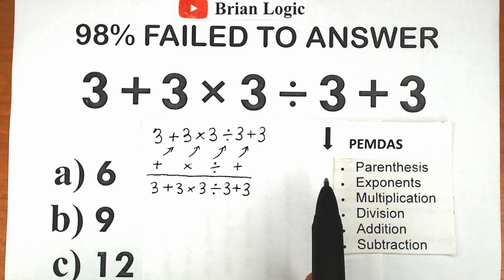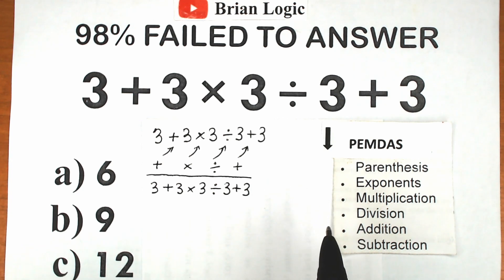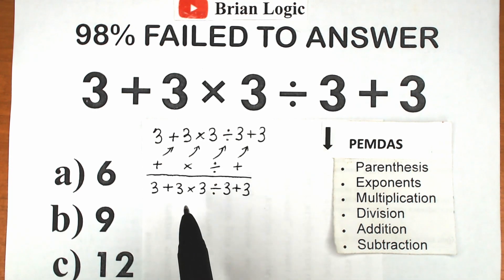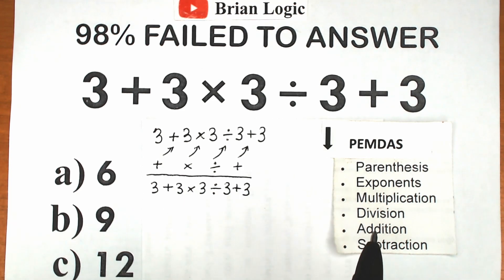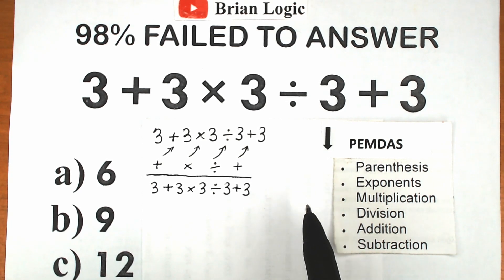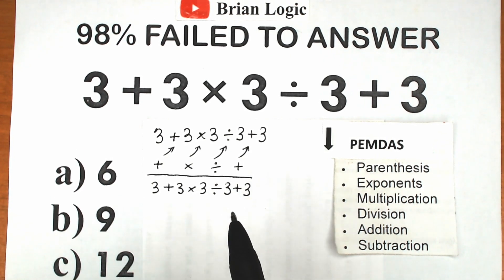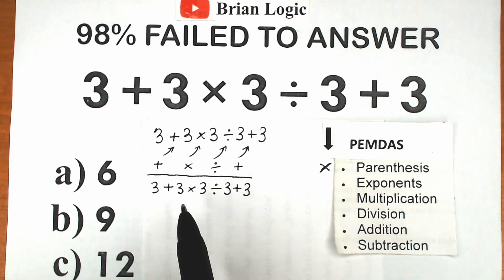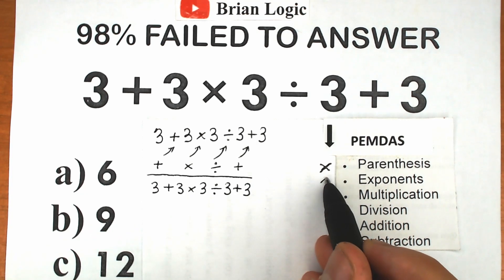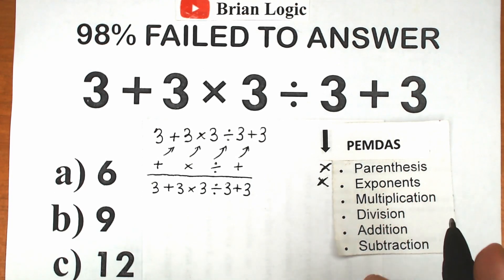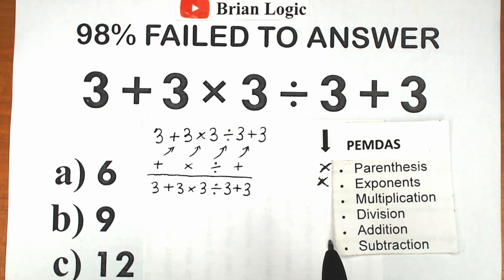PEMDAS works from the top to the bottom. First, we evaluate the expression inside parentheses. Next, we evaluate exponents. Next, we evaluate the multiplication and division group. And the last step is the addition and subtraction group. Let's scan our question. We don't see any parentheses, so we skip that part. We also don't have any exponents — no powers like 3 squared or 3 to the fourth — so we skip exponents too. Without parentheses and exponents, the question is simpler.